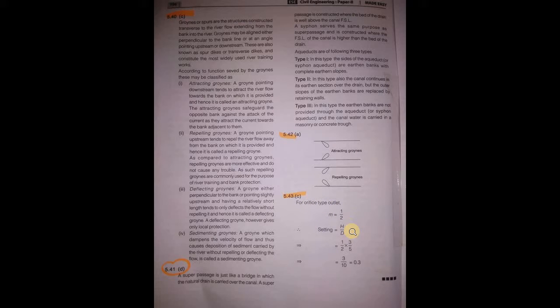For orifice type outlet, m equals half and the setting equals h by d.